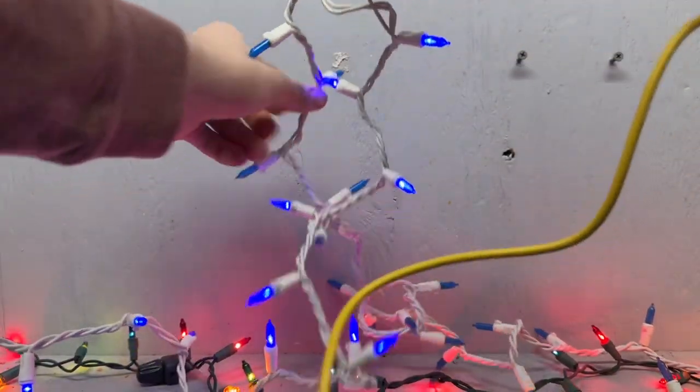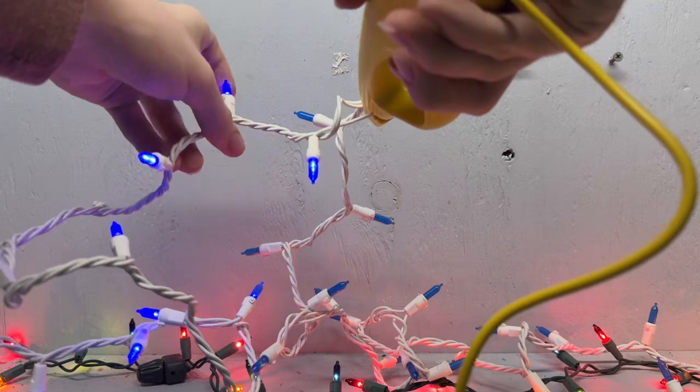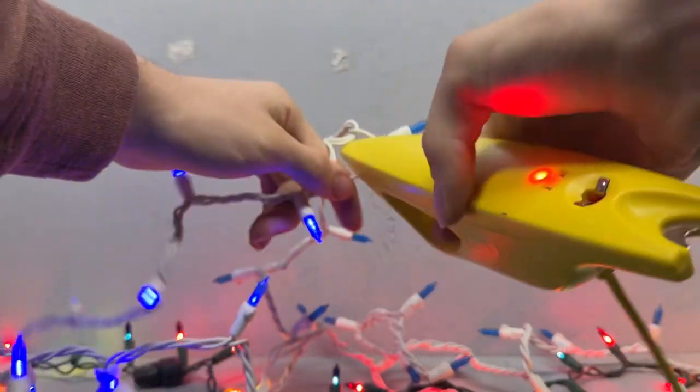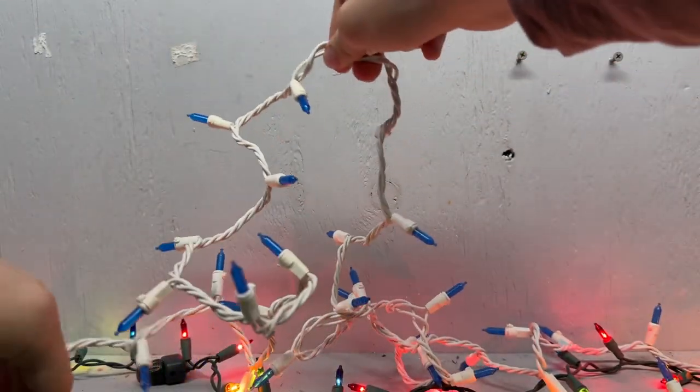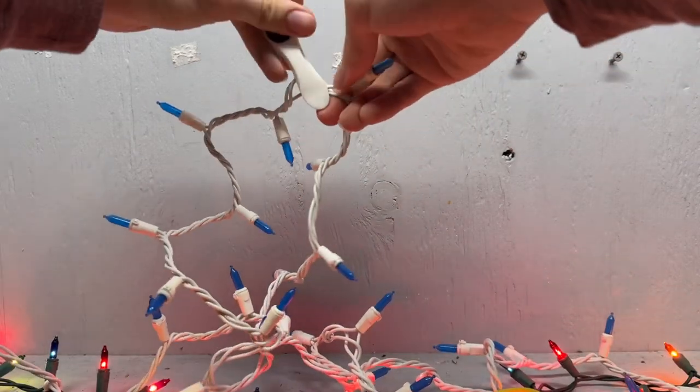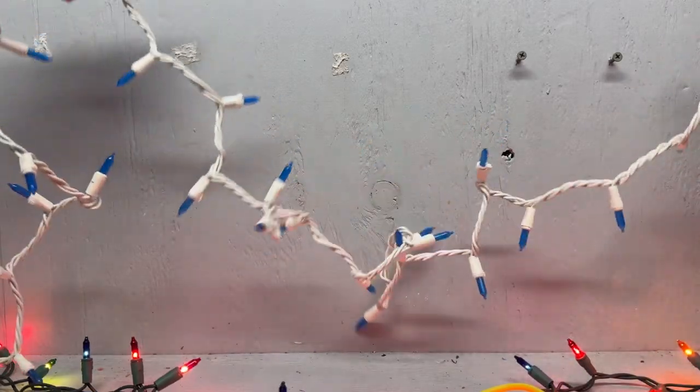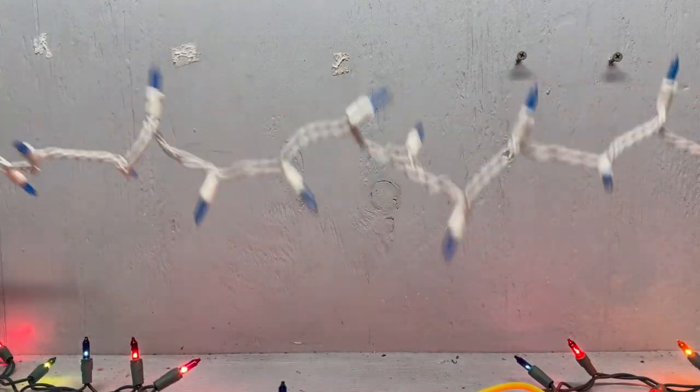So now, as you can see, the left section is lighting up and the right section is not. So I'm going to take my clothespin on the left, put it between the last bulb I tested. So now the section is even smaller. We probably have about 15 or so lights.